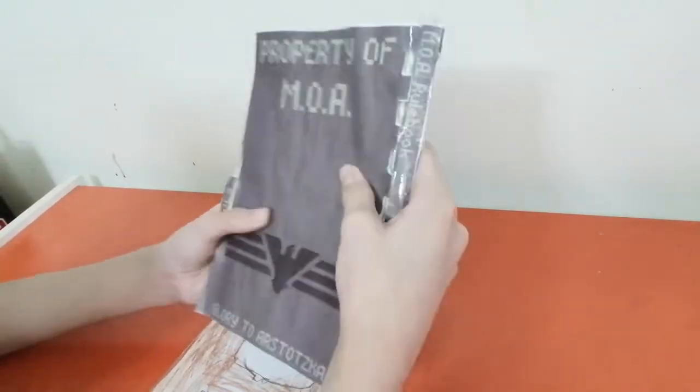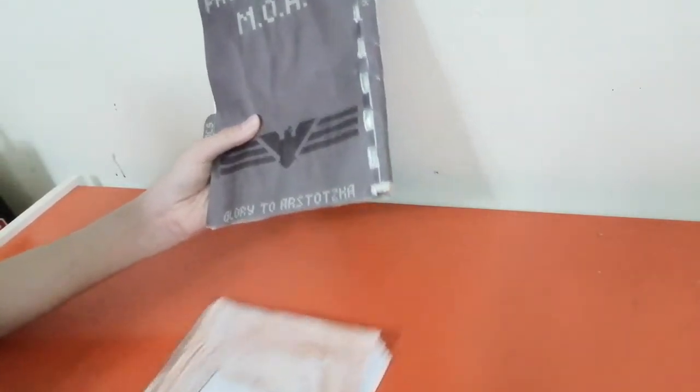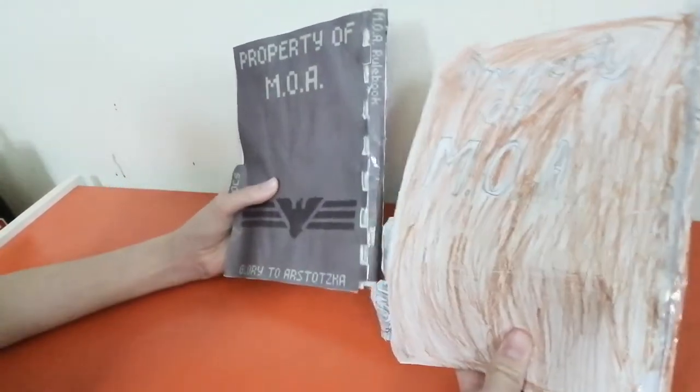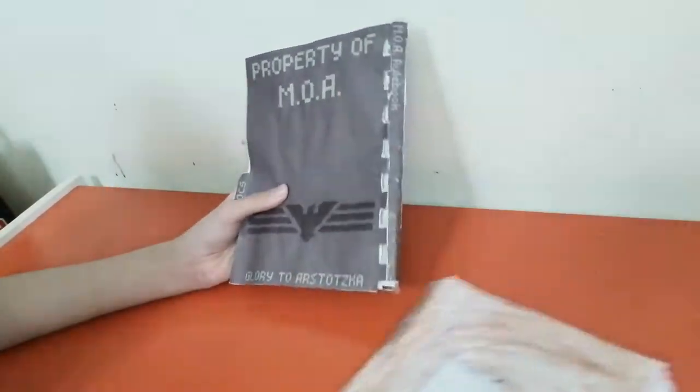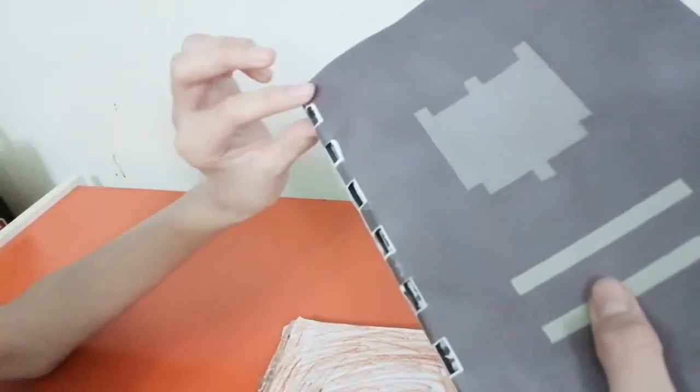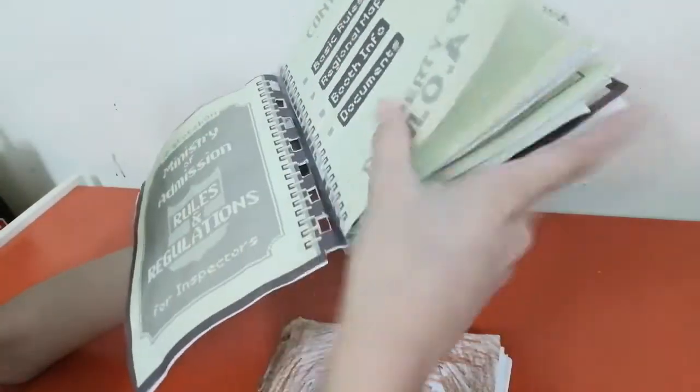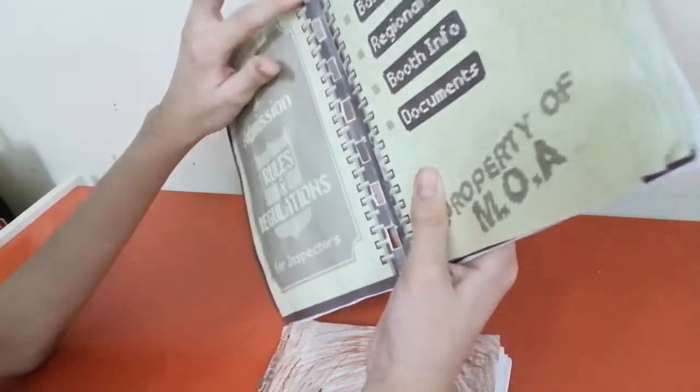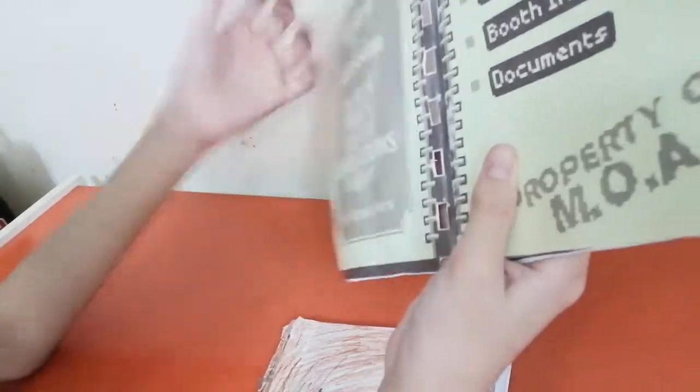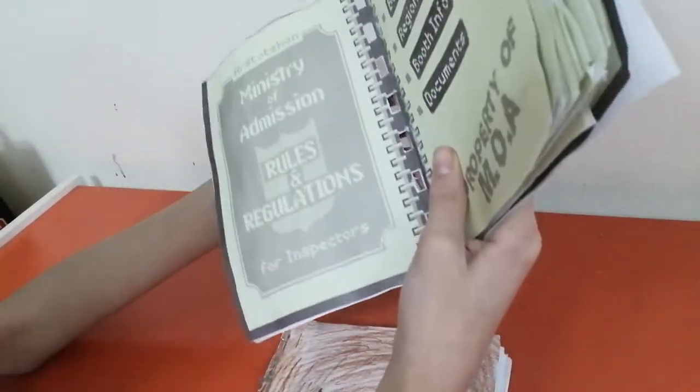You can't see the back of the book, so he just made this with the symbol Property of MOA and this little Arstotzkan flag or symbol. Glory to Arstotzka. For me, I only put Property of MOA. Here you see it's like an actual notebook because there's like holes in it.